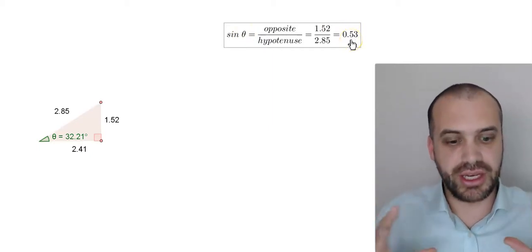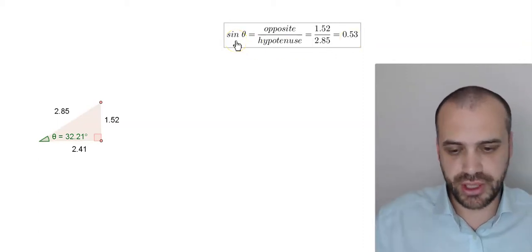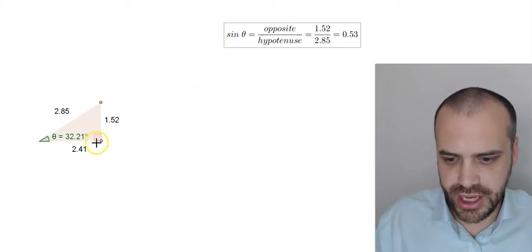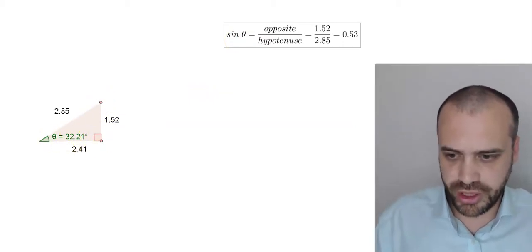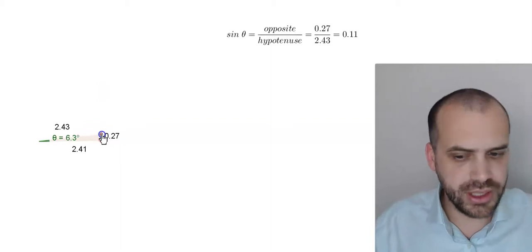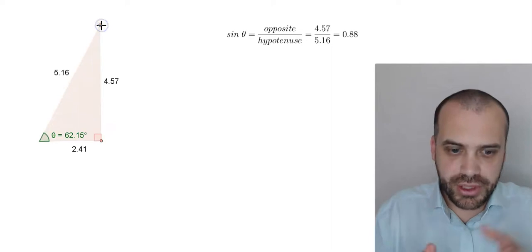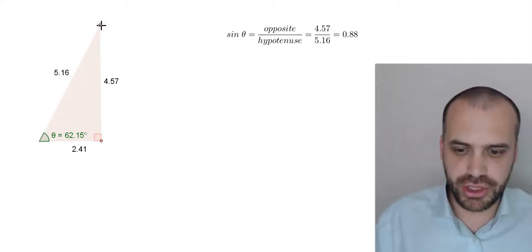But that still doesn't really explain what sine is. Sine is actually a table of values. What we're doing is taking all of the triangles that exist, or the right angle triangles that exist, from very very small ones to very very large ones, and we've calculated all of those ratios.